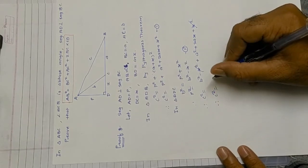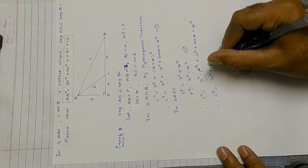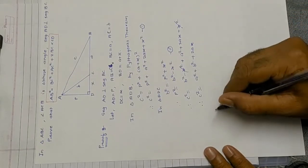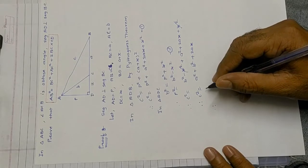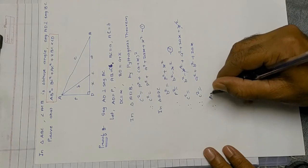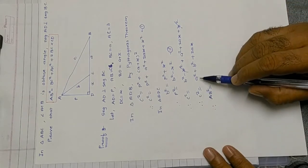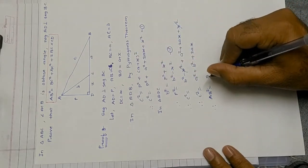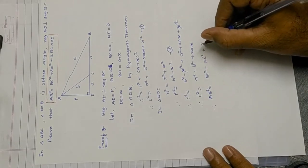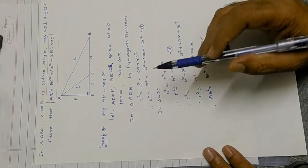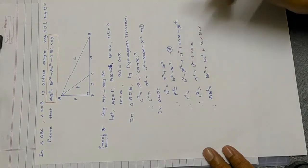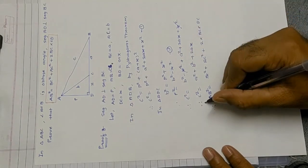Substituting p² = b² − x² into equation one: c² = b² − x² + a² + 2ax + x². The +x² and −x² cancel, giving c² = a² + b² + 2ax. Since c = AB, a = BC, and x = DC, this becomes: AB² = BC² + AC² + 2·BC·DC. Hence proved.